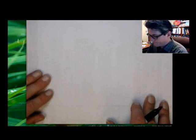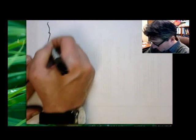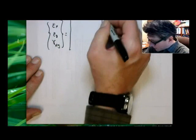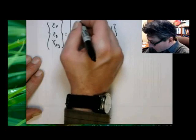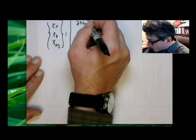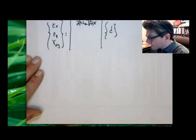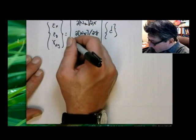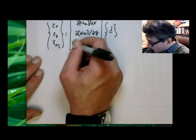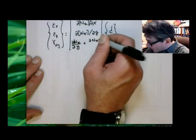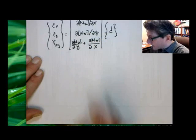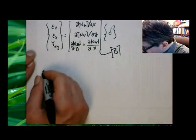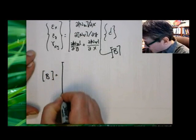Writing this in matrix form: epsilon_X, epsilon_Y, gamma_XY equals B times D. The first row is the partial of NU with respect to X. The second row is the partial of NV with respect to Y. And the third row is the partial of NU with respect to Y plus the partial of NV with respect to X. This matrix is the B matrix.